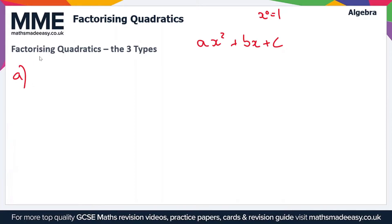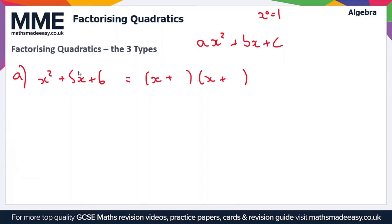The first subtype is where all the terms in the quadratic are positive. An example might be x squared plus 5x plus 6. When we factorize this expression we want to put it into double brackets: x plus something and x plus something. The numbers in the brackets need to multiply to give 6 and add together to give 5. If you're unsure why, watch our expanding brackets video on the FOIL method. Here the two numbers are 3 and 2. This is the easiest type of quadratic expression you might face.